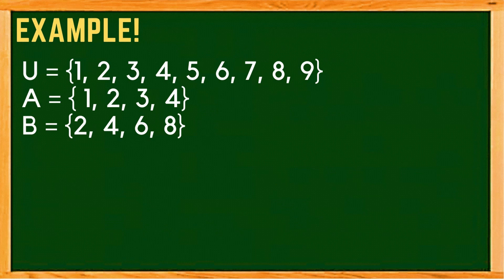From our universal set, we obtain set A consisting of the numbers 1, 2, 3, and 4, and set B consisting of 2, 4, 6, and 8 — the even counting numbers less than 10.